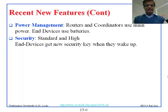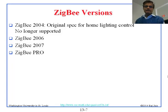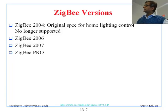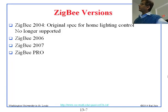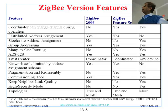If you went to sleep and wake up and find you cannot talk to anybody because the key has changed, there is a mechanism for that too. So there is a lot of security. Now the versions: Zigbee 2004 was the original spec designed for home lighting control — it is no longer supported. They updated it in 2006, and that is the last widely-used version. Then they updated to 2007, and then to Pro. Here is the comparison.